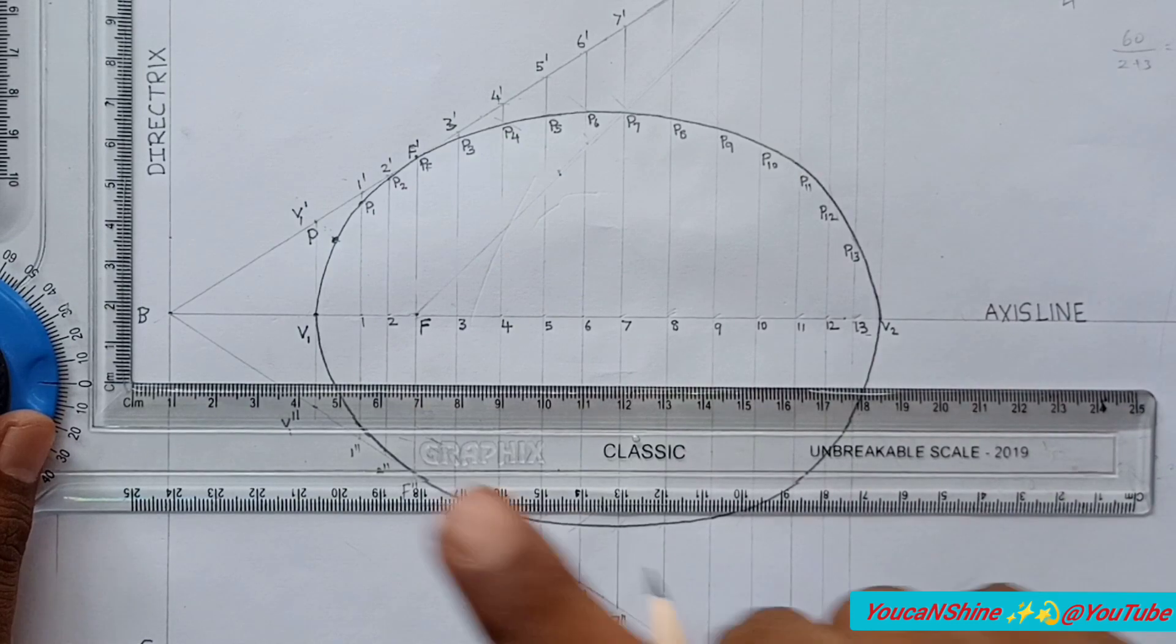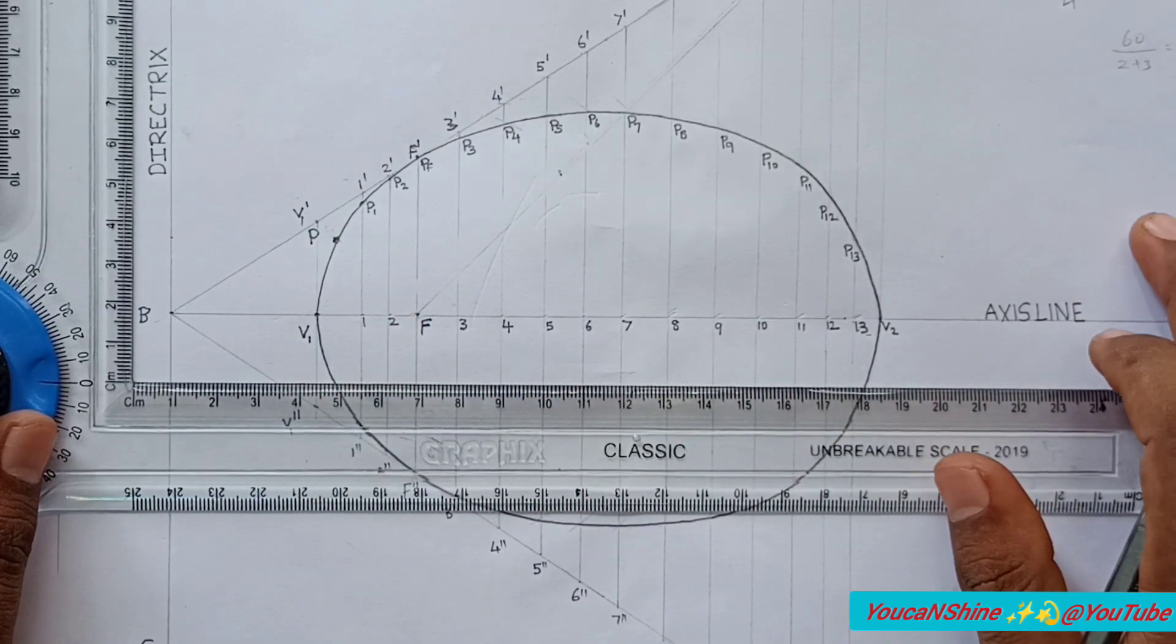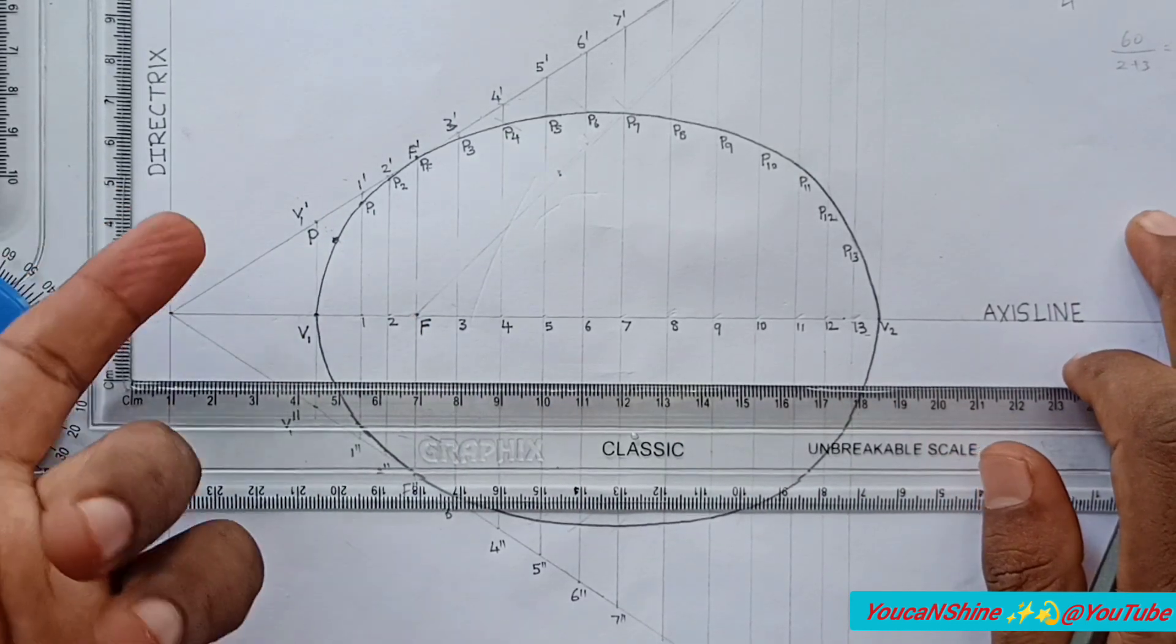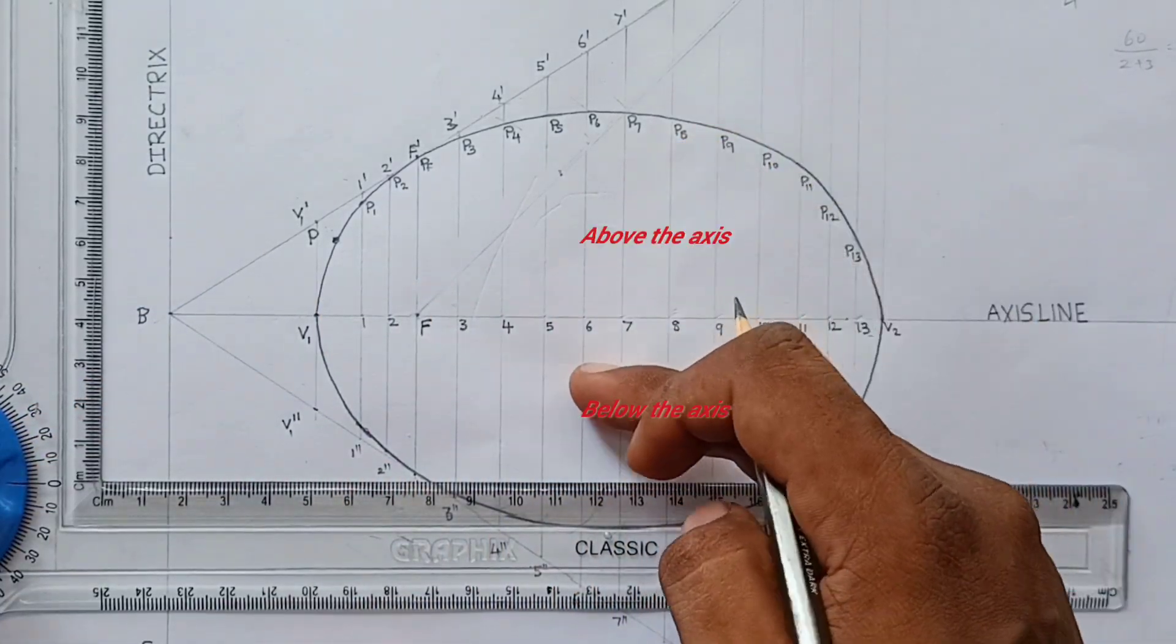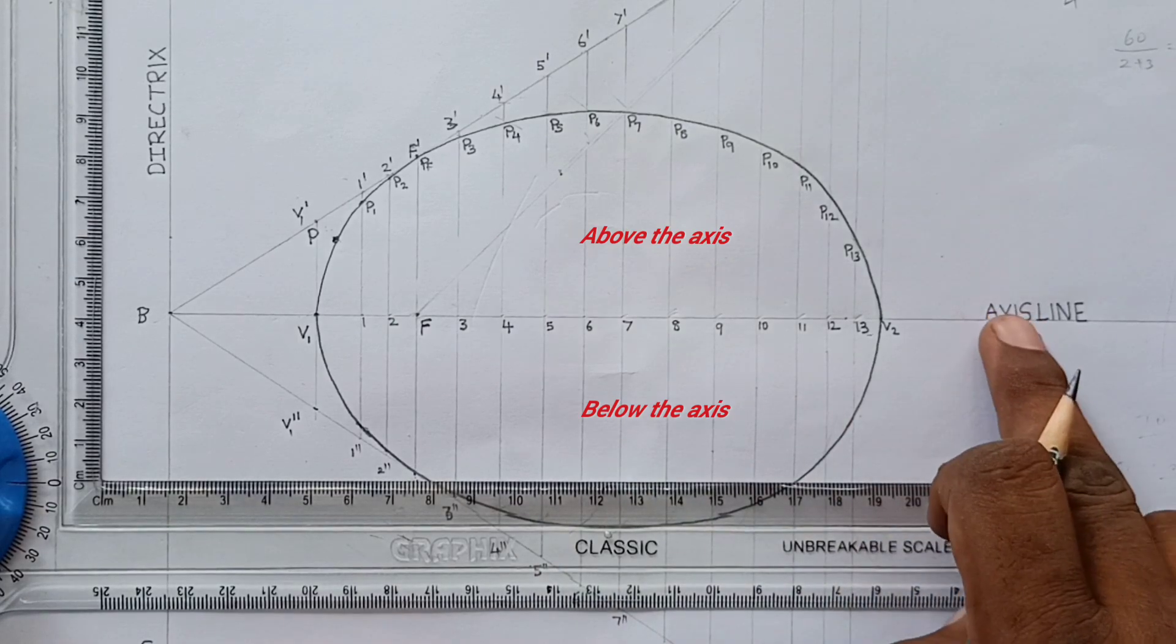This is the first step. If you found this one, you can add 40mm to the 40mm. This is the axis line.